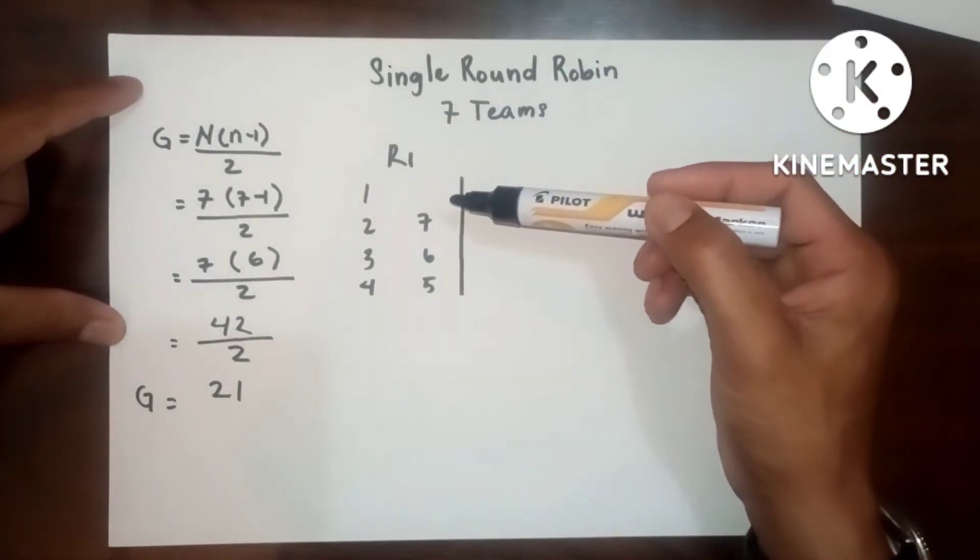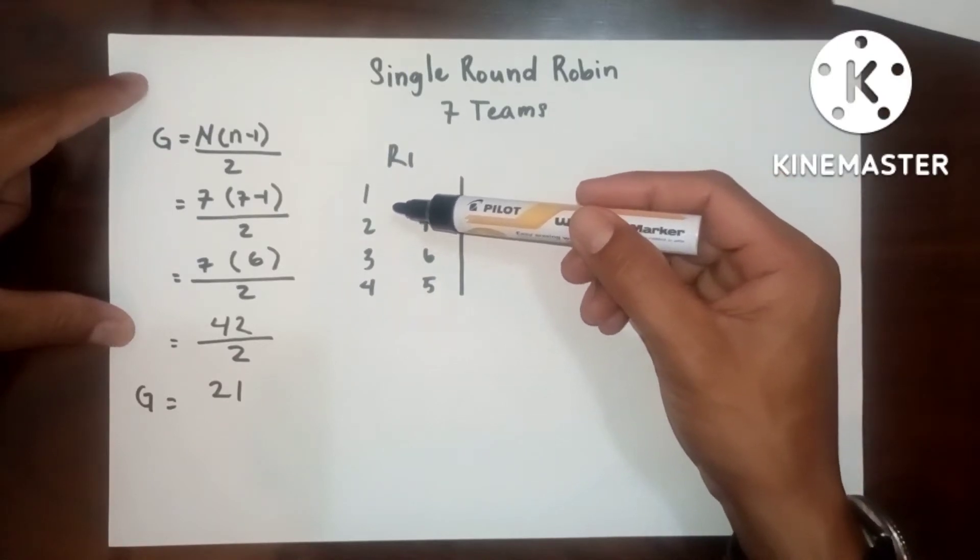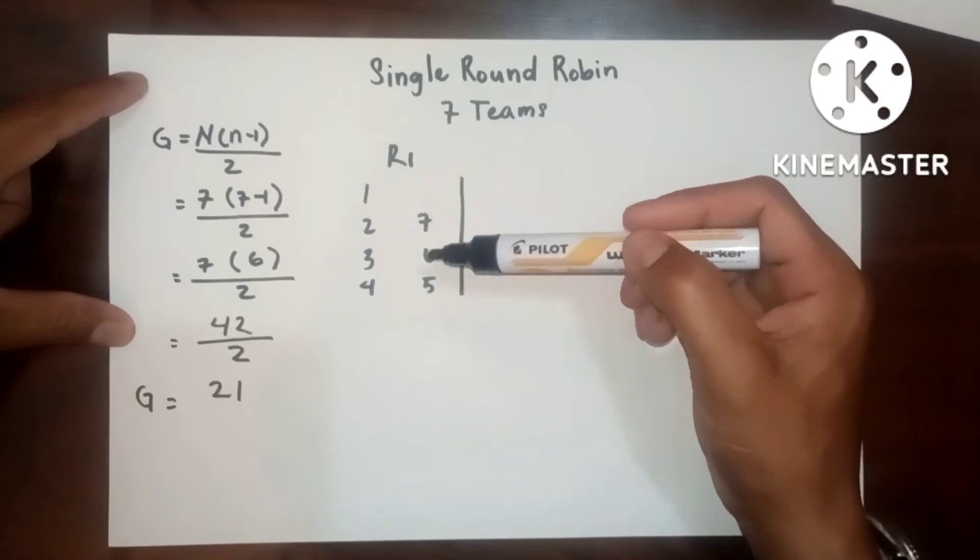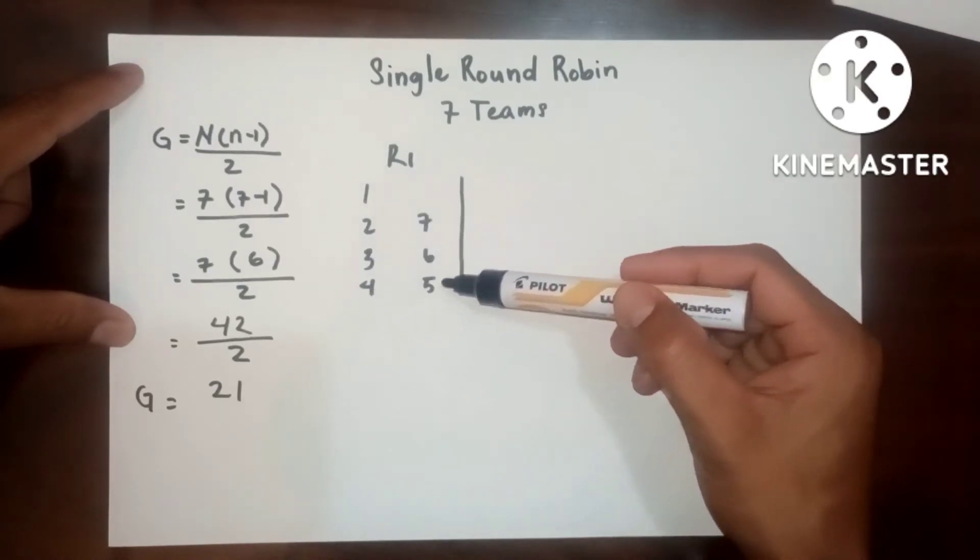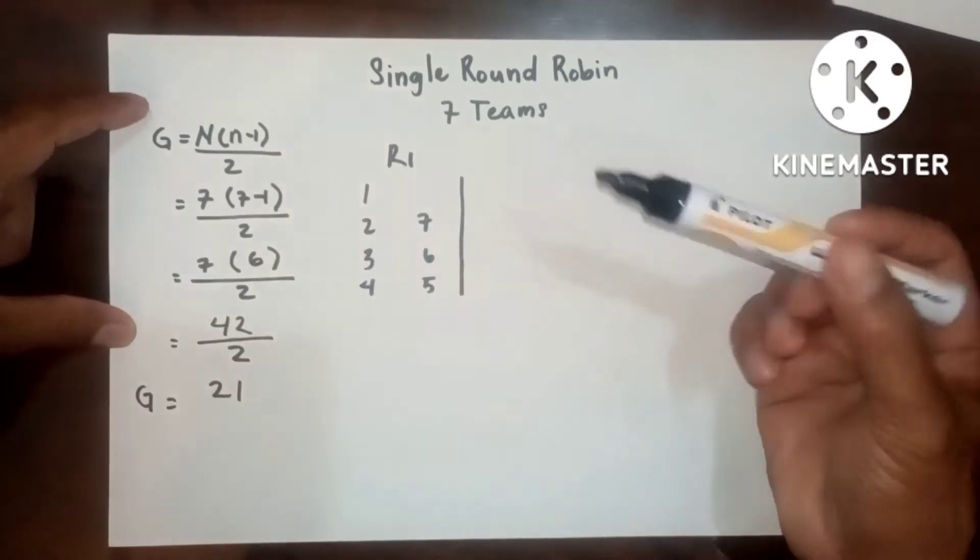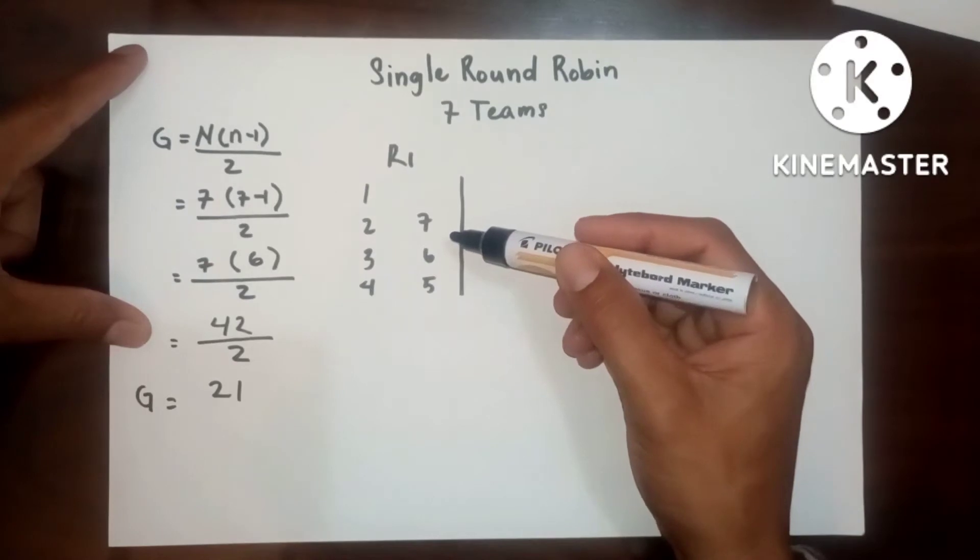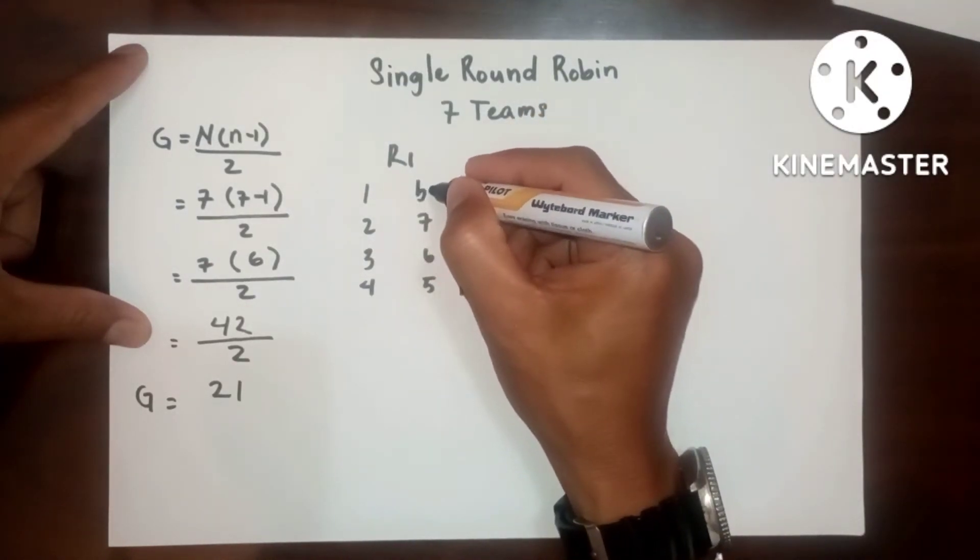The number of teams or number of entries should be written in two vertical columns. First column, then the second column, and it must be in counterclockwise. So, to make this even, bye should be 1.